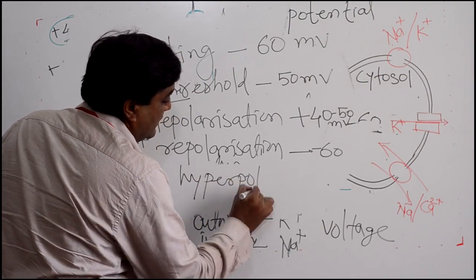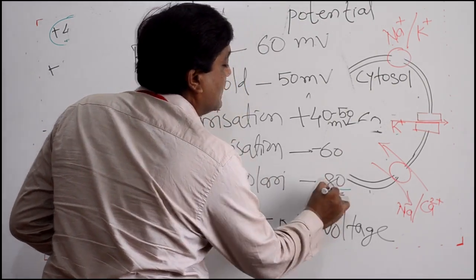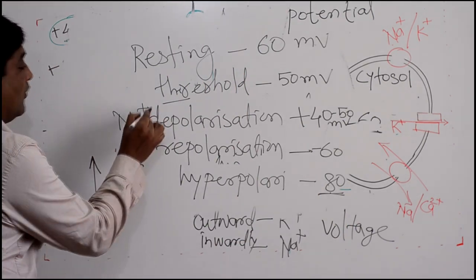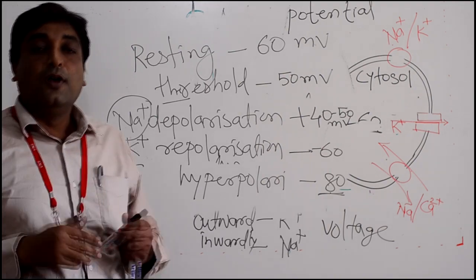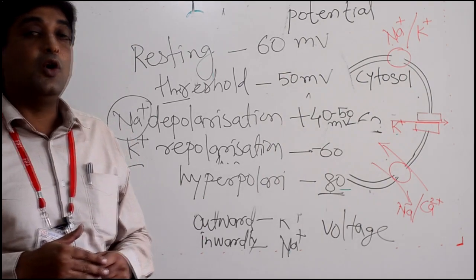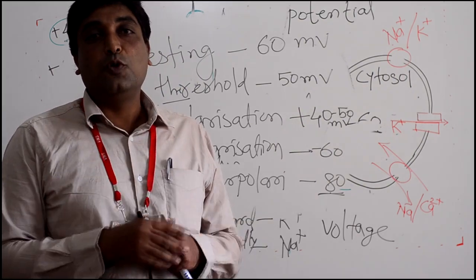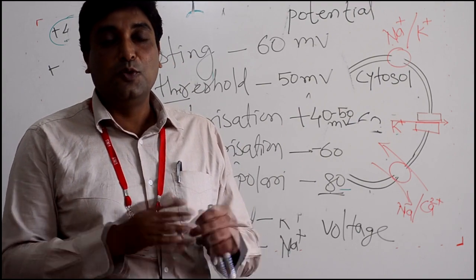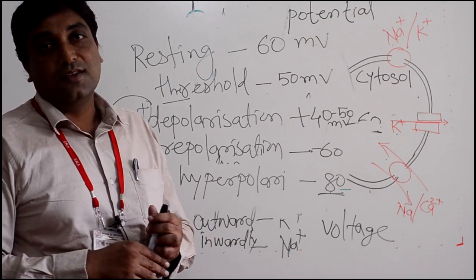If hyperpolarization occurs, the cell goes beyond minus 60 millivolts. To regenerate the impulse again, the sodium ion channels must come out of their inactivated state. In summary, action potential is always dependent on ionic exchange — sodium and potassium — and the transport mechanism depends on ion channels and exchangers. This has been an overview of the electrical impulse generated by the cell. Thank you.